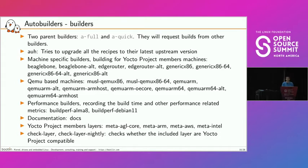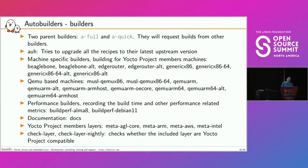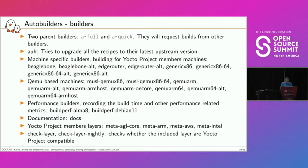Then we have QEMU-based machine builders, which are very important because by default OpenEmbedded-Core only supports QEMU-based machines — and this allows us to actually run the generated images on QEMU. We have performance builders to record build time and performance-related metrics, tracking whether a modification makes the build faster or slower. We also build the documentation.